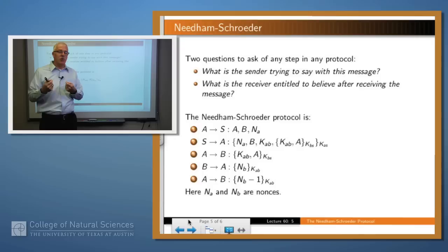So B generates a new nonce, N sub B, encrypts it with the new session key, K, A, B, and sends the result to A. So that's B saying, hey, A, I've got the key and I can use it. Tell me whether you're in the same circumstance. So after step four, then A knows that B has the key and can use it.